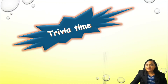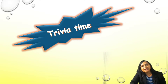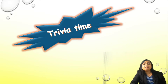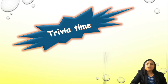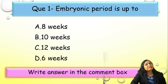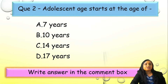After Part 1 and Part 2, let us have some question-answer time. I suggest that please write answers in the comment box along with the question number, or you can write in a copybook, because the upcoming videos will be solutions of the MCQs with keys as well as concepts, along with pictures and mnemonics. Question 1: the embryonic period is up to — A) 8 weeks, B) 10 weeks, C) 12 weeks, or D) 6 weeks. Question 2: adolescent age starts at the age of — A) 7 years, B) 10 years, C) 14 years, or D) 17 years.